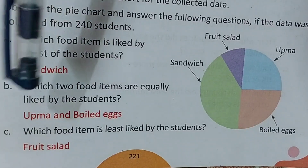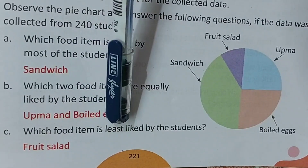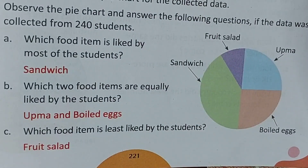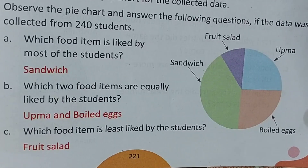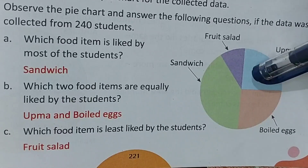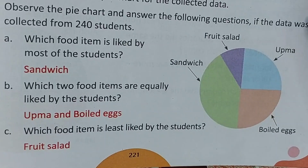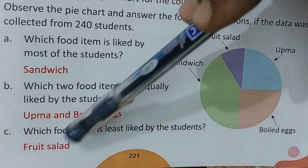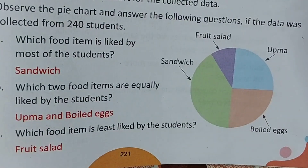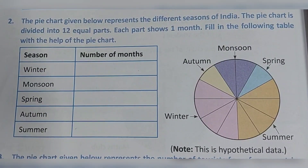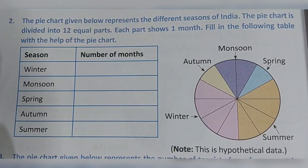Next question: which food item is least liked by the students? What does 'least' mean? Least means minimum. So which item has a very small amount? Fruit salad. So fruit salad is the answer.